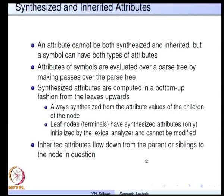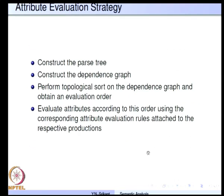As for inherited attributes, their values flow down from the parent or siblings to the node in question, and then flow downwards again from that node. For attribute evaluation strategy: we build the parse tree, construct the dependence graph of the attributes, perform a topological sort on the dependence graph to obtain an evaluation order, and then carry out attribute evaluation using this order with the computation rules attached to the respective productions.